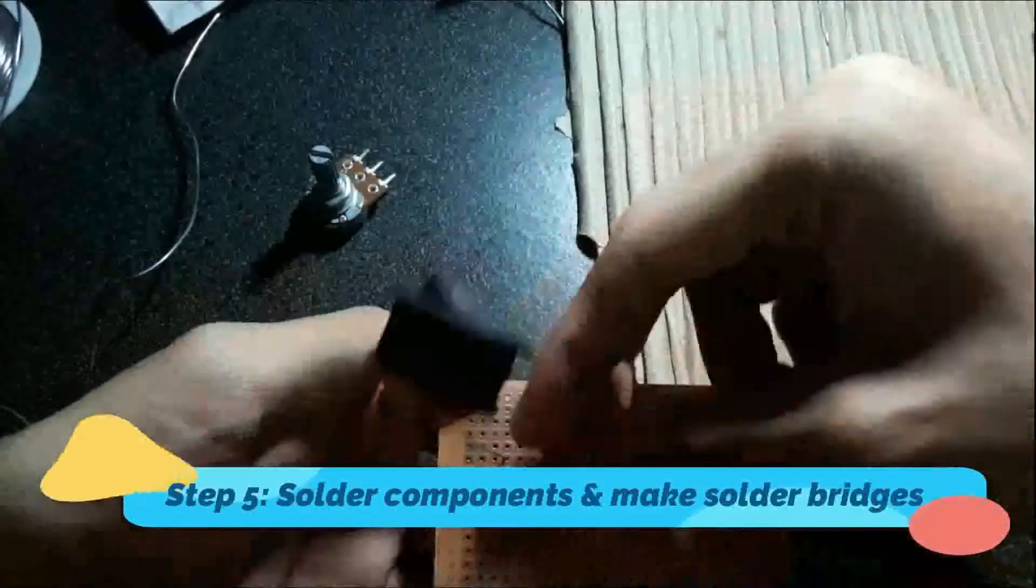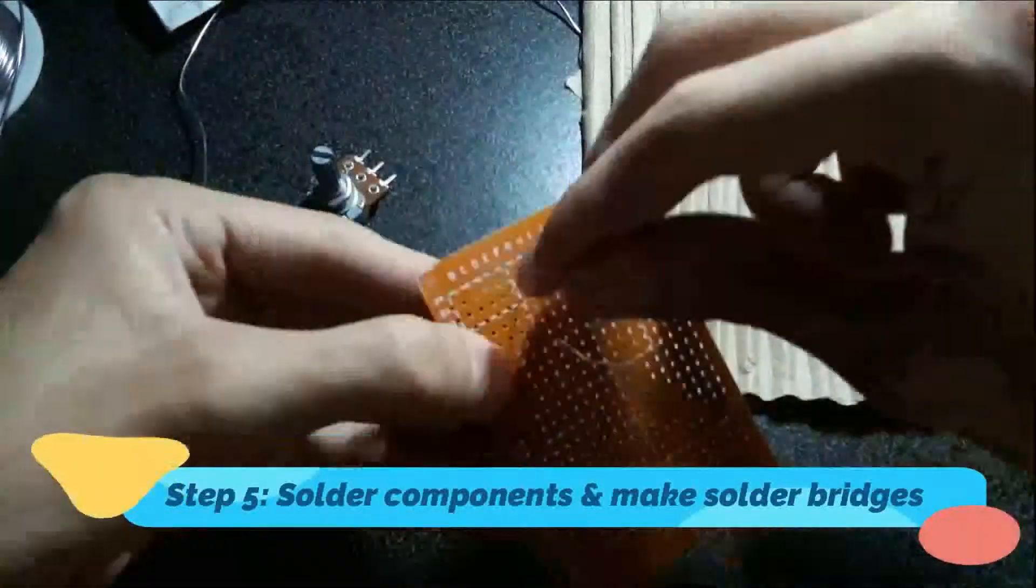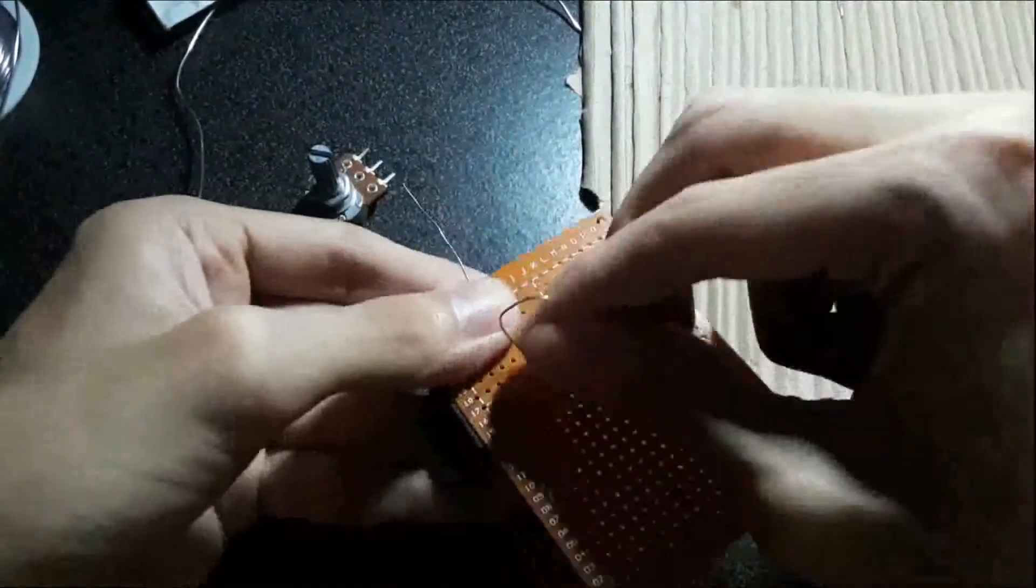Step 5: Now, it's time to solder the components onto the dotted PCB one by one.